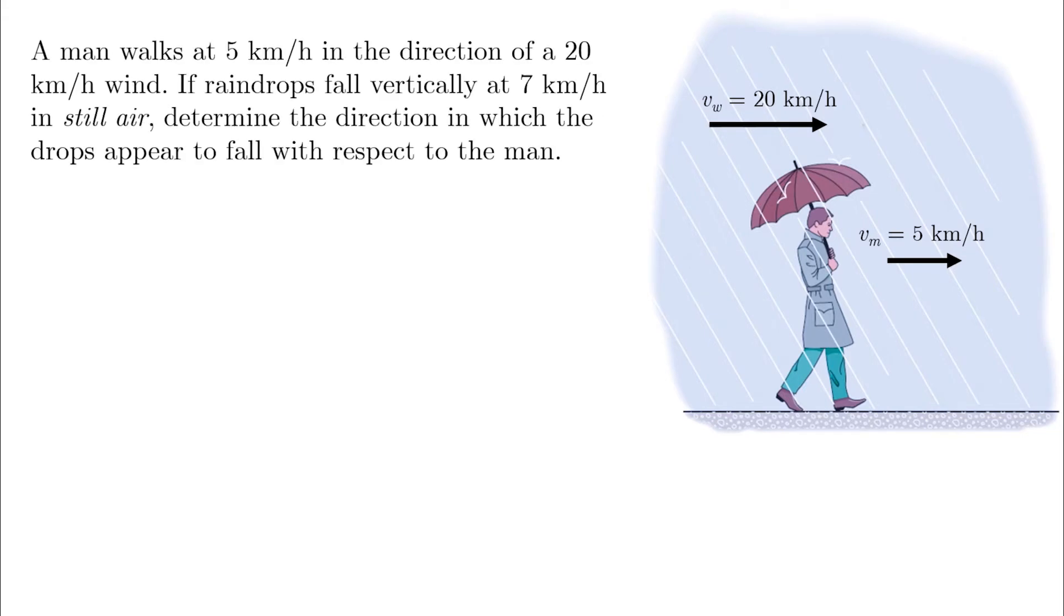A man walks at 5 km per hour in the direction of a 20 km per hour wind. If raindrops fall vertically at 7 km per hour in still air, determine the direction in which the drops appear to fall with respect to the man.